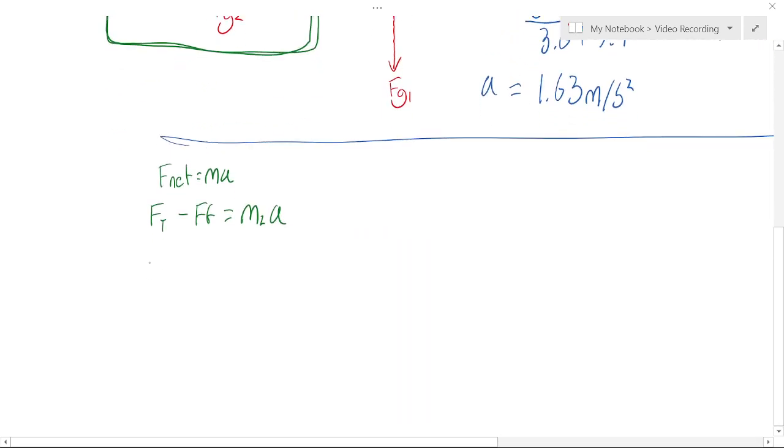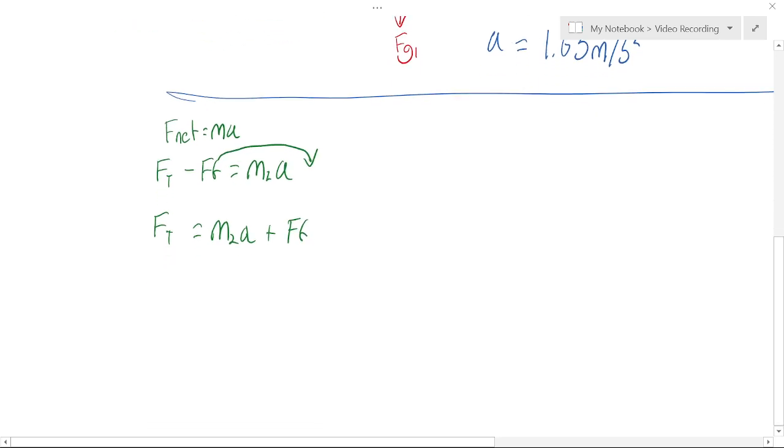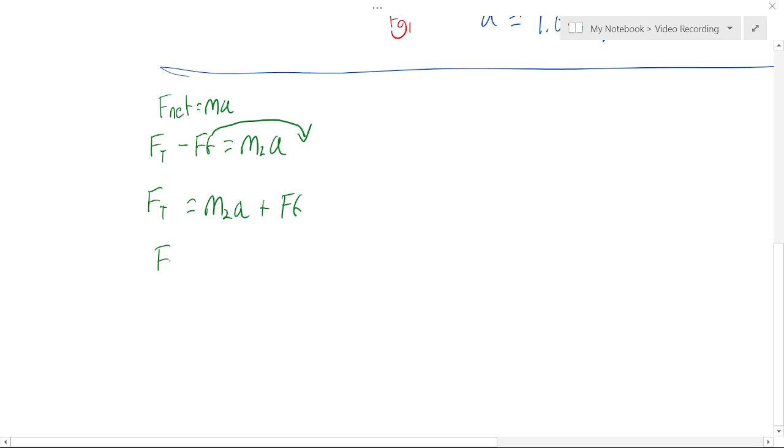Now if we solve this for tension we will get Ft equals m2a plus Ff. So I've added friction to both sides and then we find Ft equals